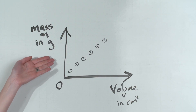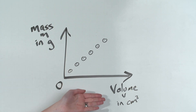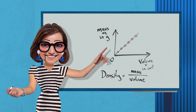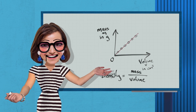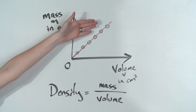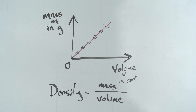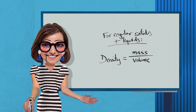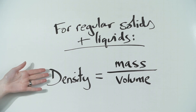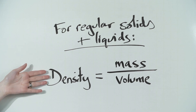Again, when we plot a graph of mass against volume, we see that a straight line through the origin means that the mass of the water is directly proportional to its volume. Once again, the gradient of the graph is the density of the material, which in this case is water. From these experiments, we can see that for both regular solids and liquids, density equals mass divided by volume.